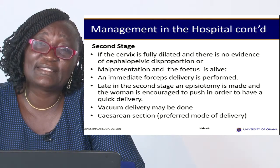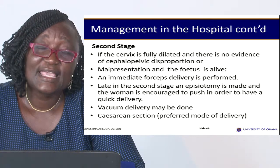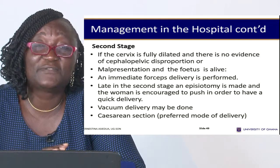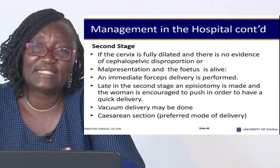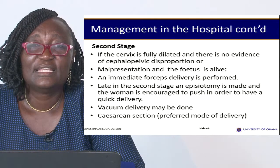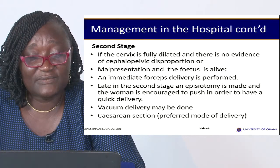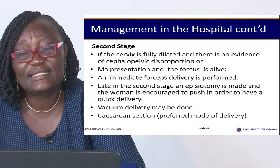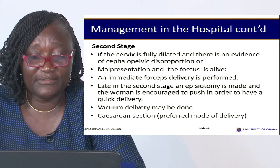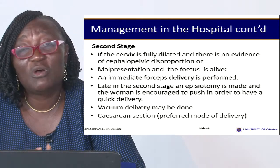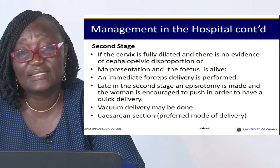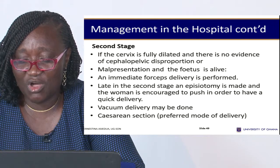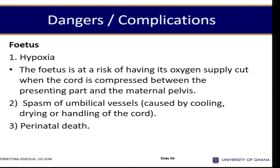If cord prolapse occurs in the second stage — meaning the cervix is fully dilated — hasten delivery. If it is not possible to hasten delivery quickly, opt for caesarean section.